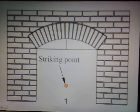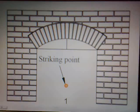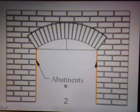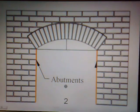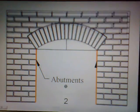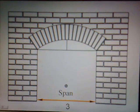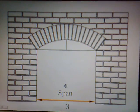One: the striking point — the center point of the circle of which the curve of the arch is a part. Two: the abutments — these are the brickwork on either side supporting the arch. Three: the span — this is the distance between the abutments.